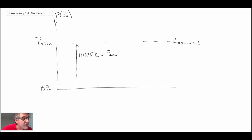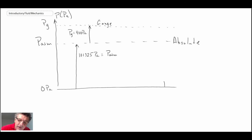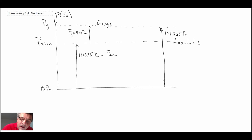If we have a gauge pressure, that would be above atmospheric pressure — let's say we have a gauge pressure up here with a magnitude of P sub g equals 400 pascals. In terms of absolute pressure, that would be 101,325 plus 400, which equals 101,725 pascals absolute.